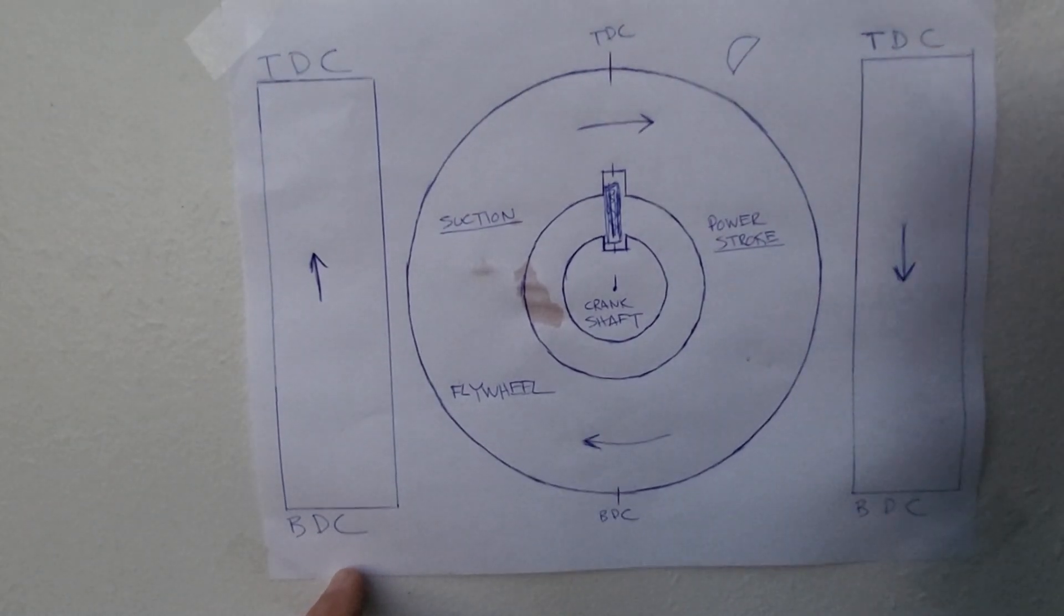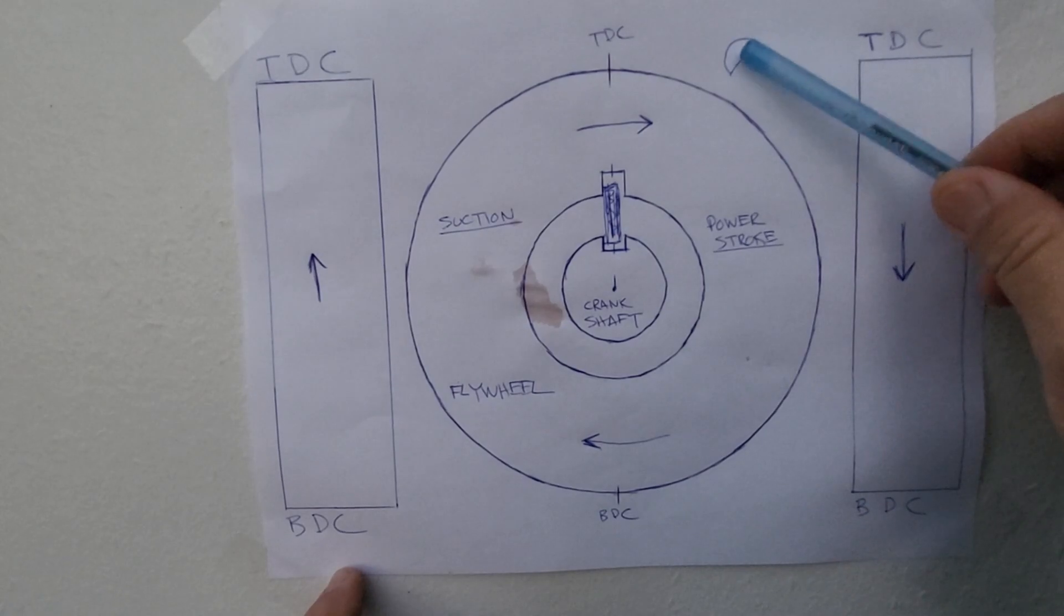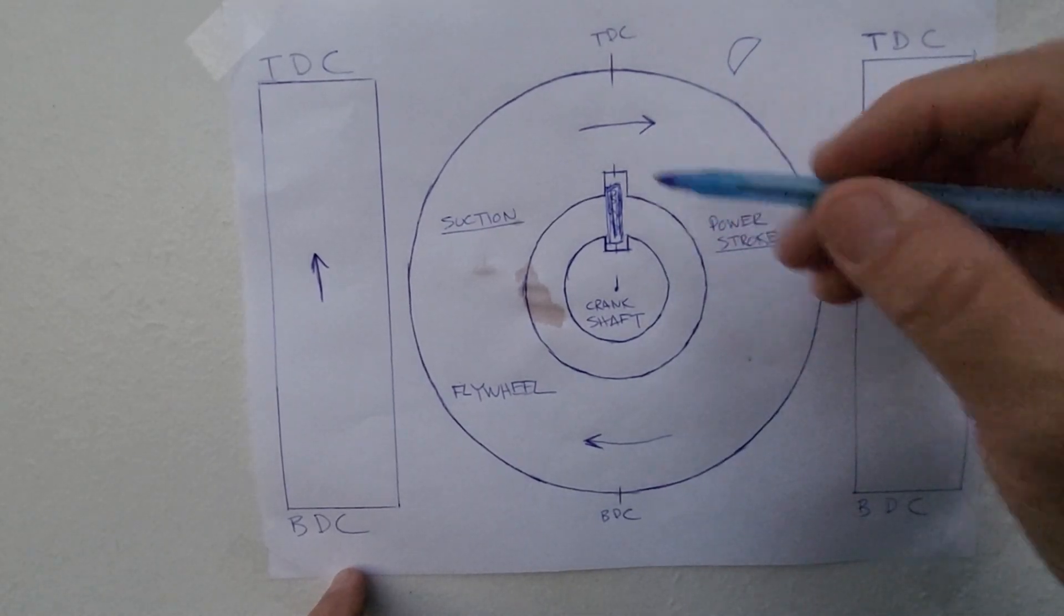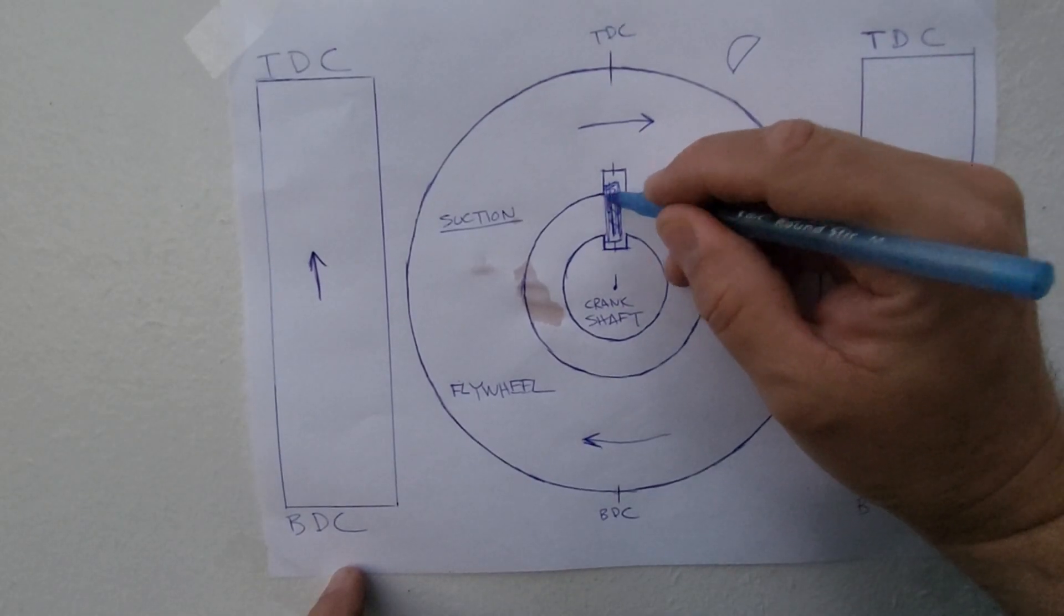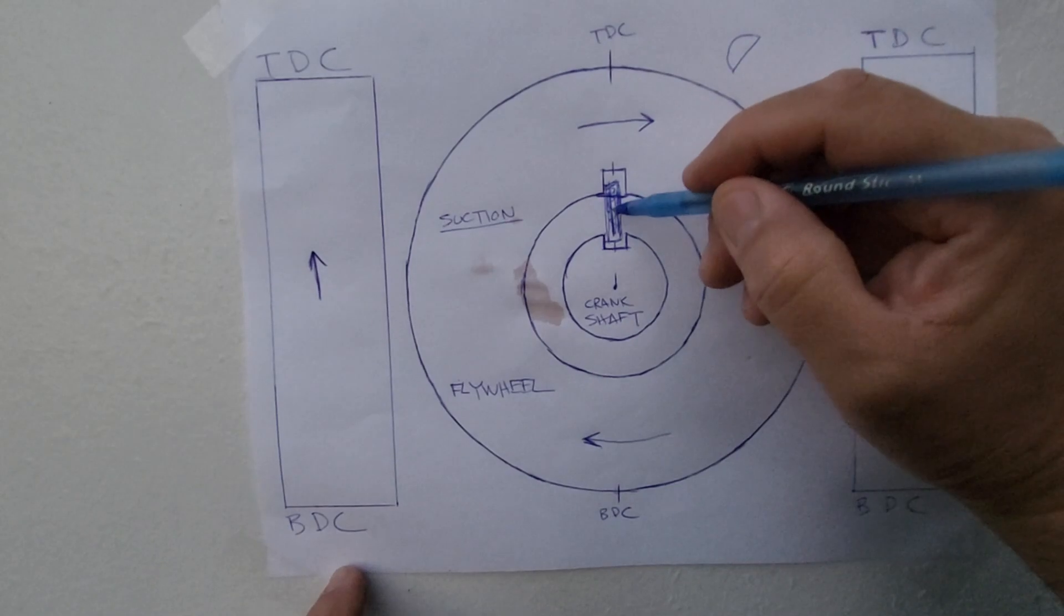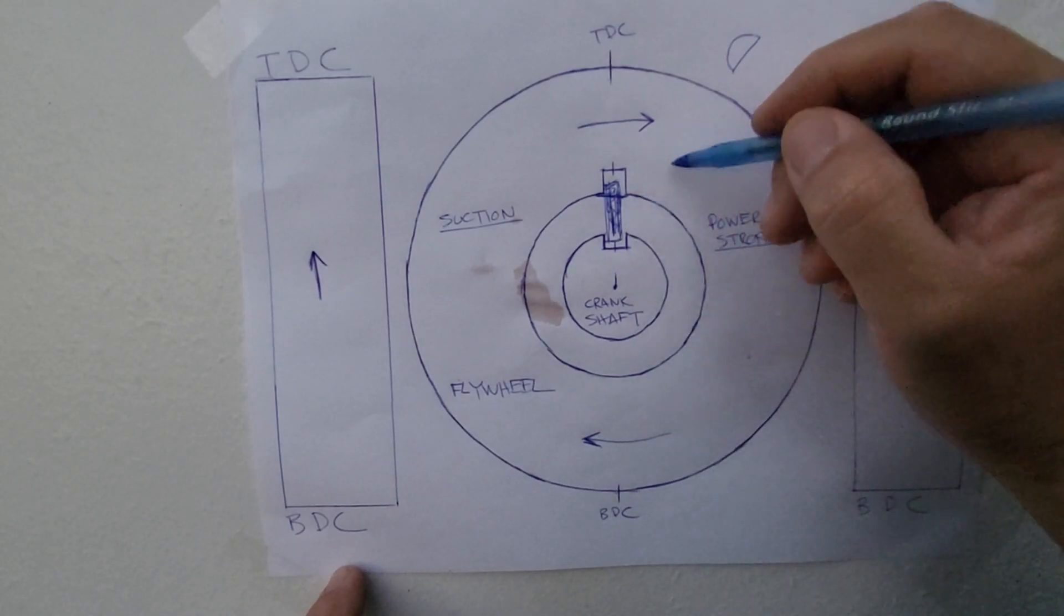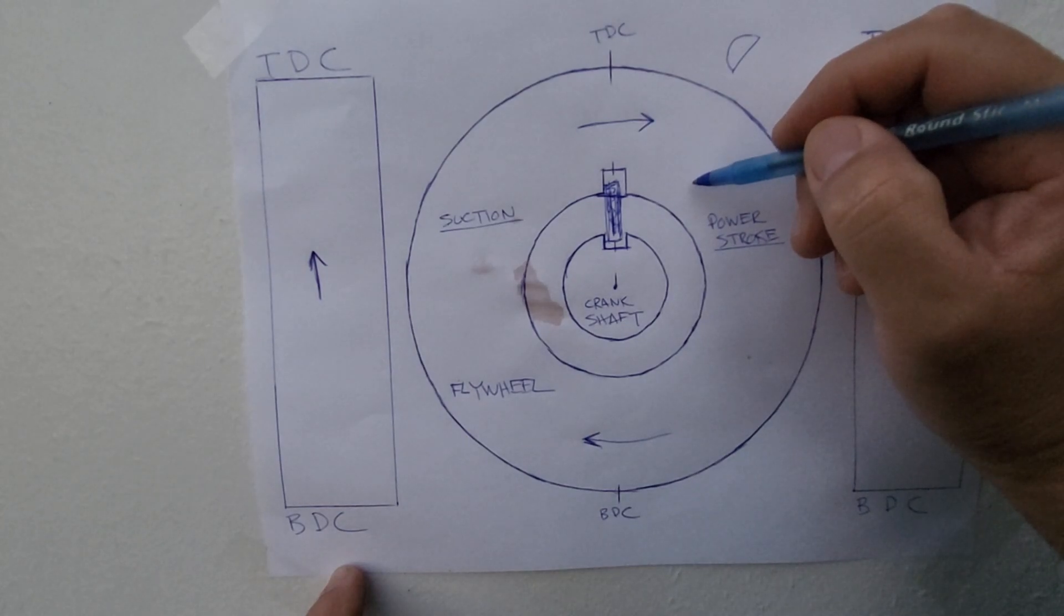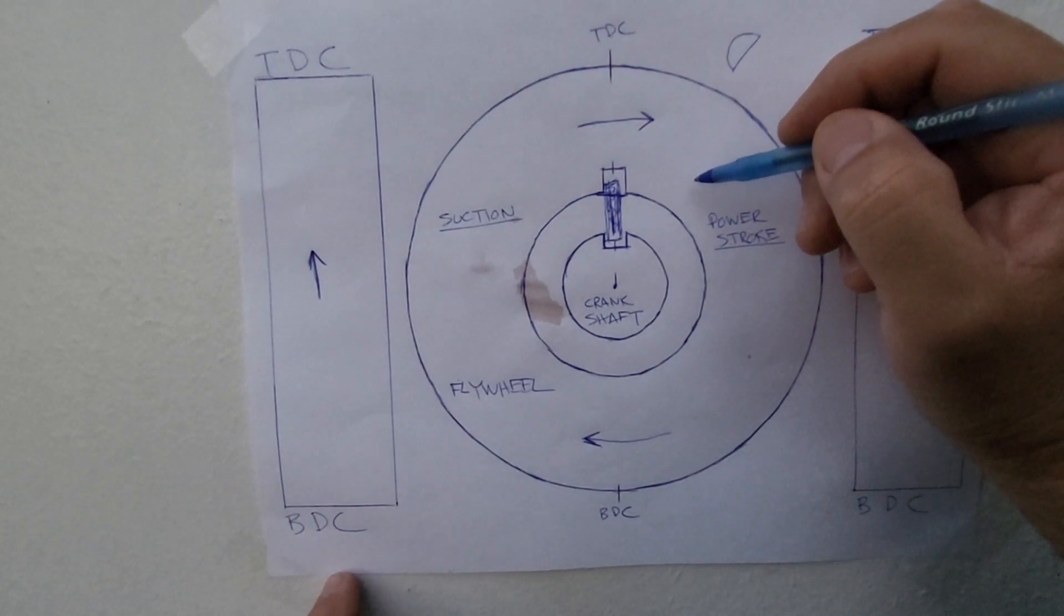So some engines have that if they're older, some of the new ones do not. The keyway is actually embedded directly right into the flywheel, so that way if you damage the keyway, you have to buy a new flywheel. That's a money-making opportunity that some companies have made.